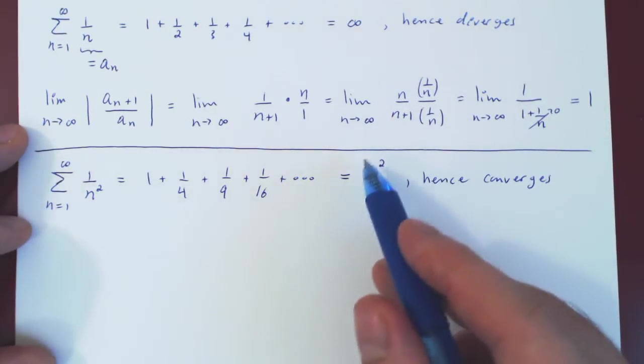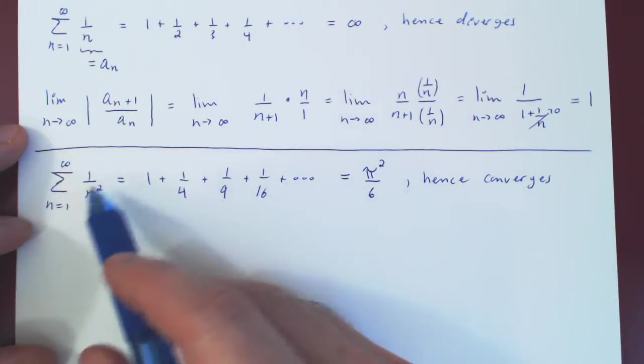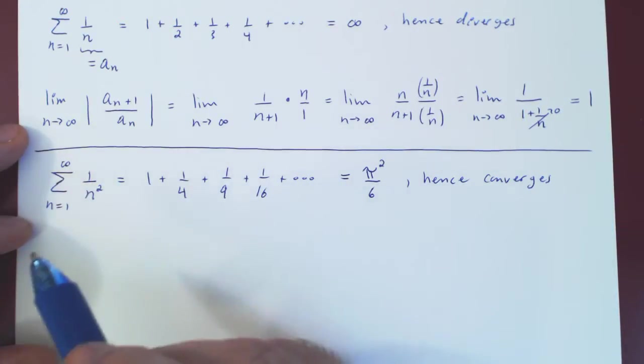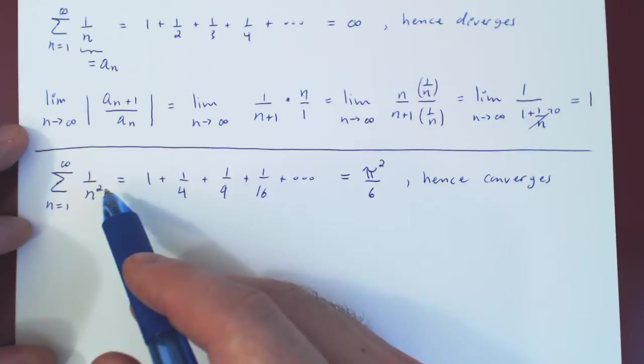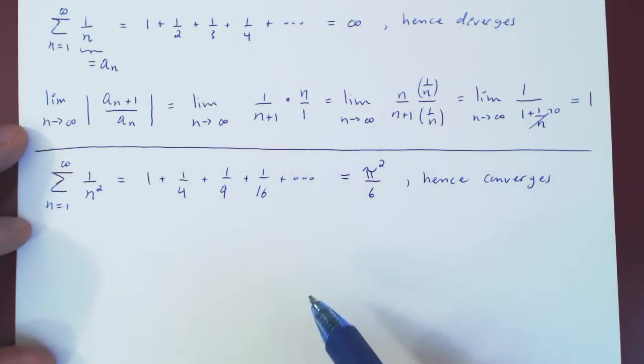So we could of course ignore this and simply state we have a P-series with P being 2. 2 is larger than 1, therefore the P-series converges. And that's it.